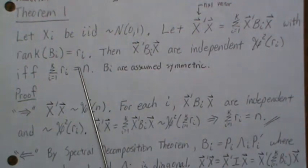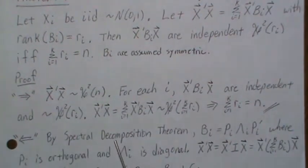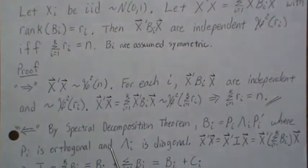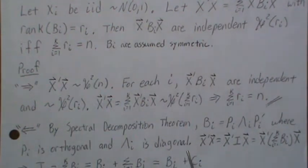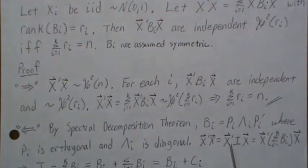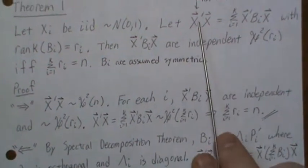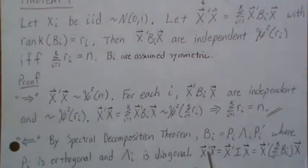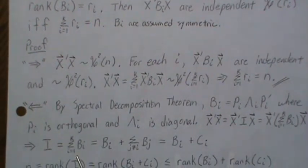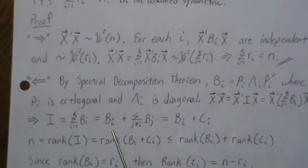Now let's go back the other way: assume the sum of ranks is n and show independence holds. By the spectral decomposition we can decompose Bi into Pi * LambdaI * Pi', where the Pi are orthogonal matrices and LambdaI are diagonal. Putting the identity matrix into X'X, and assuming the sum holds, that implies the sum of these matrices is the identity. Notationally, let's pull out the i-th one and sum the remaining, calling this Ci.